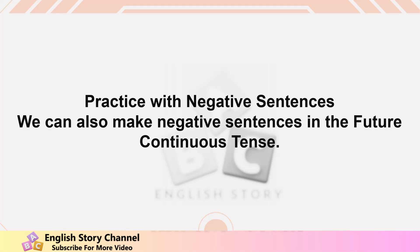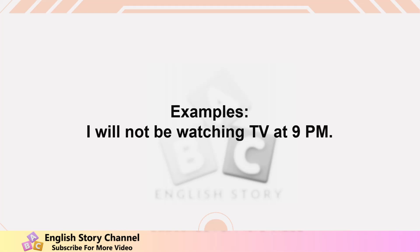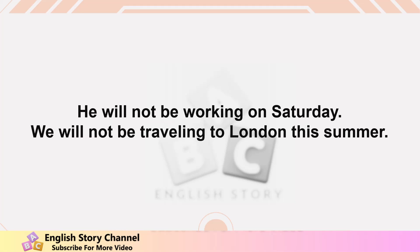Practice with negative sentences. We can also make negative sentences in the Future Continuous Tense. The structure for negative sentences is: Subject + will not be + verb with -ing. Examples: I will not be watching TV at 9 p.m. She will not be going to the party tomorrow. They will not be playing basketball next week. He will not be working on Saturday. We will not be traveling to London this summer.